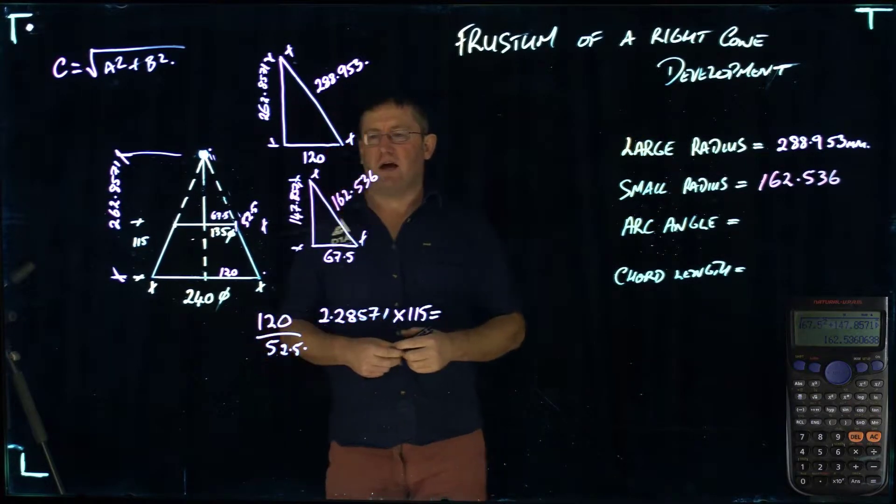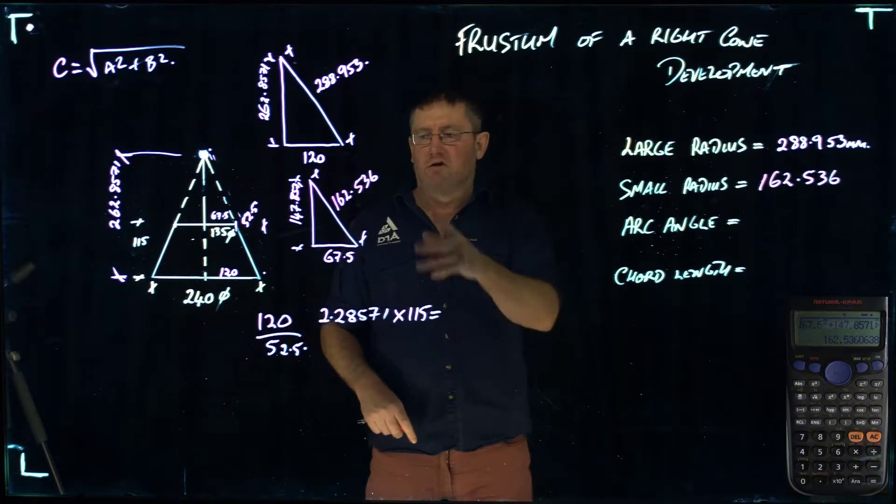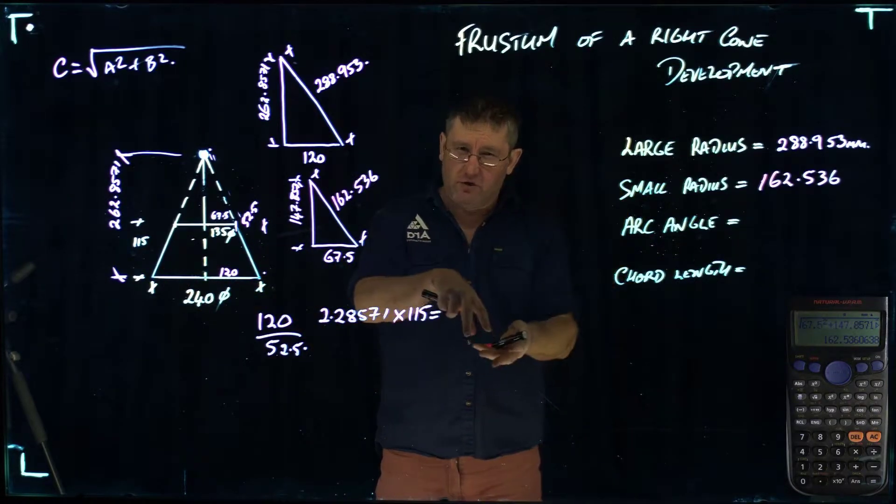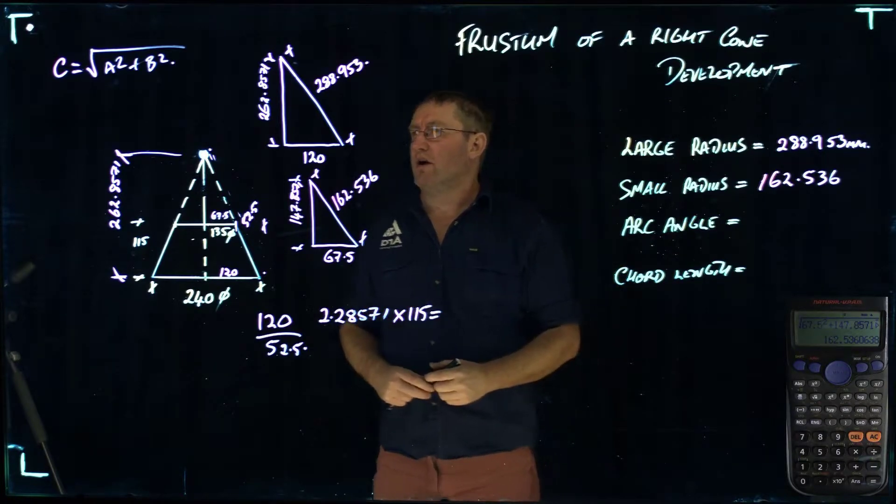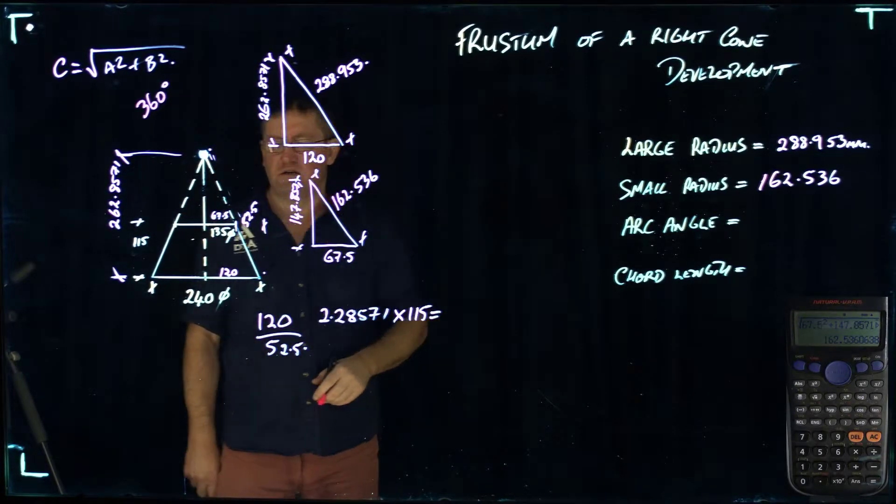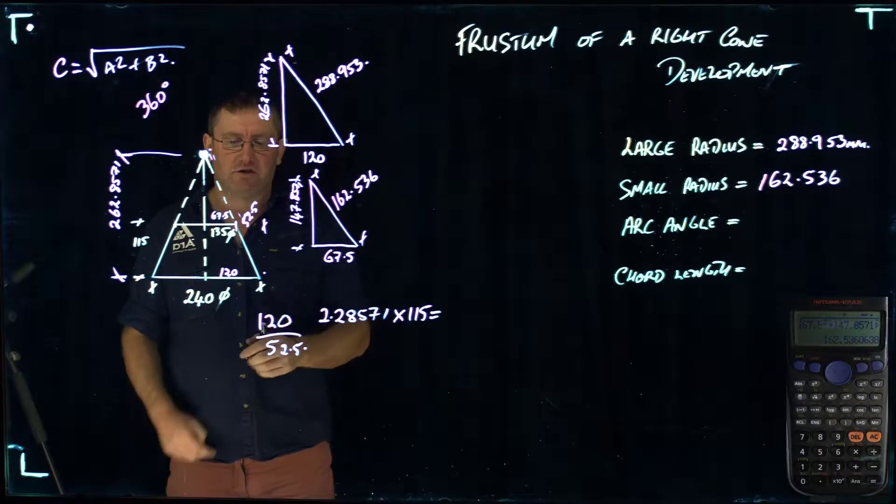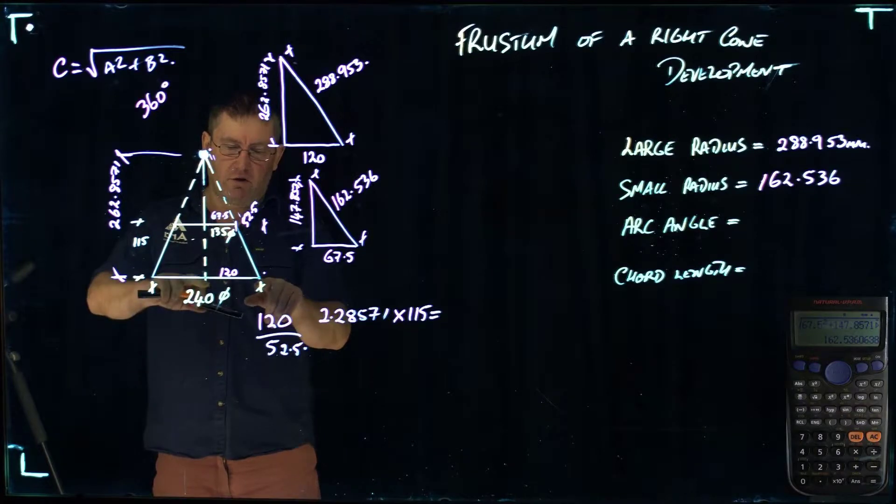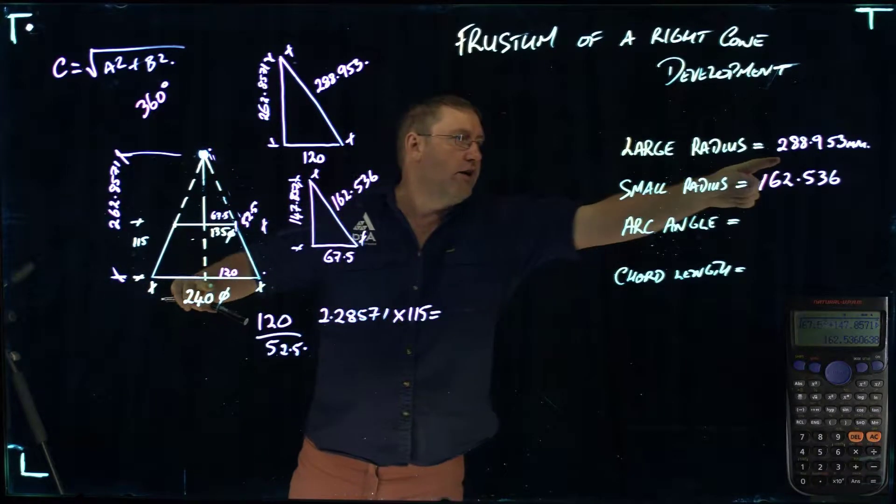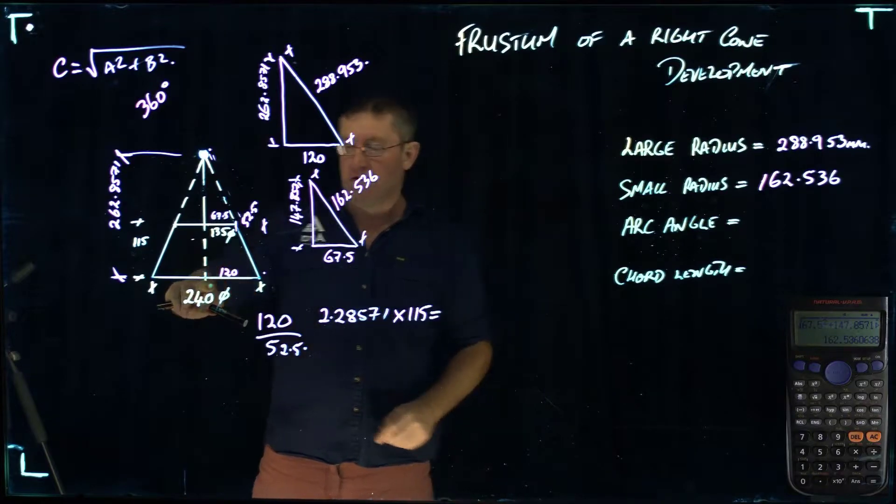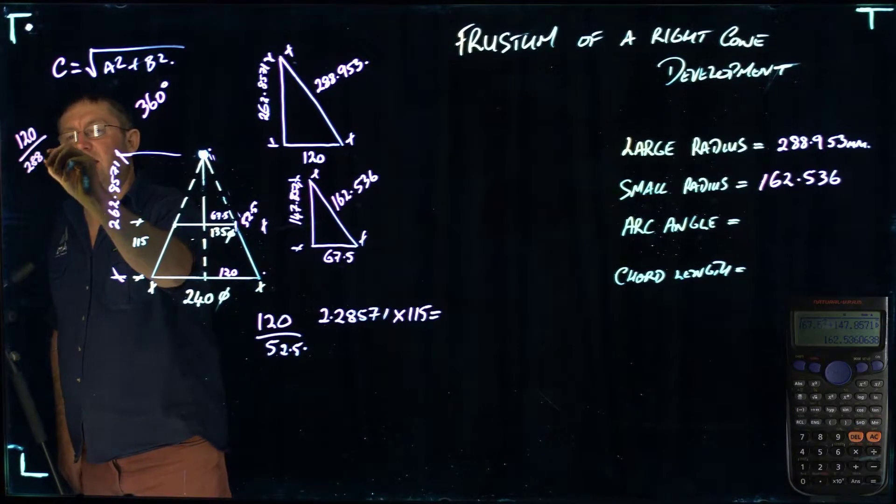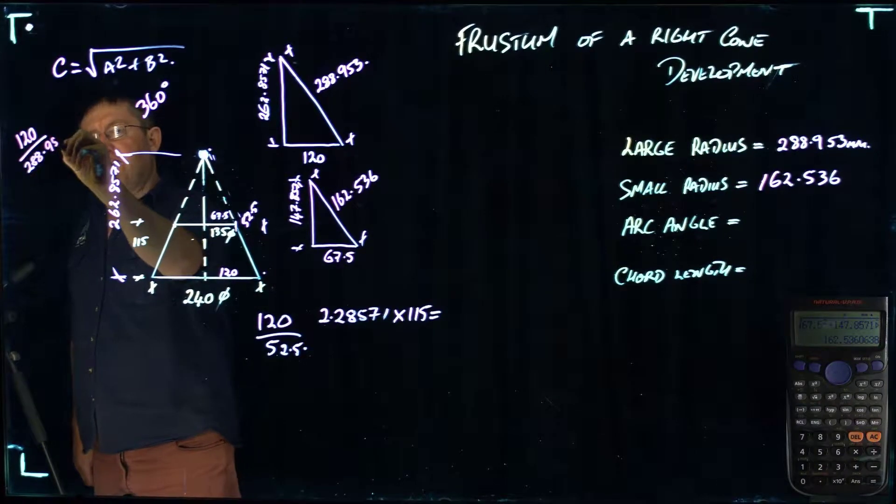So what I need to do now, when I develop my pattern, I'm going to draw a full circle. The pattern is actually going to take up a portion of that circle, and it's an arc angle. We know that the circle has 360 degrees in it. It's going to be a portion of that 360 degrees. The way we determine that portion is we divide the small diameter of the actual base of the cone by the large radius of 288.953. So it's going to be 120 millimeters, 120 divided by 288.953.